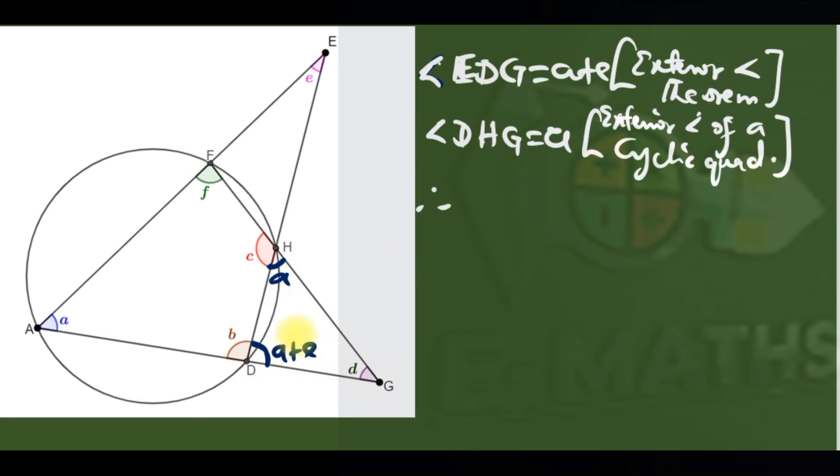Therefore, if you sum the angles, a plus a plus e plus d will give us 180 by angle sum theorem for a triangle.